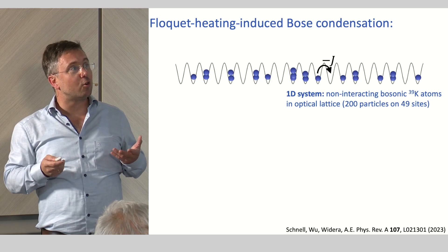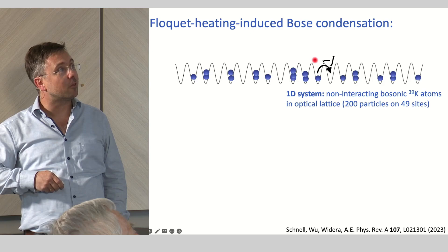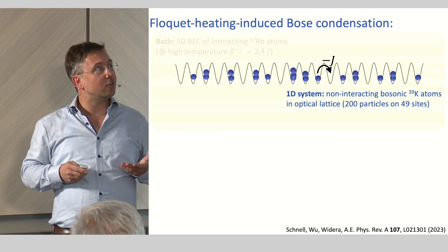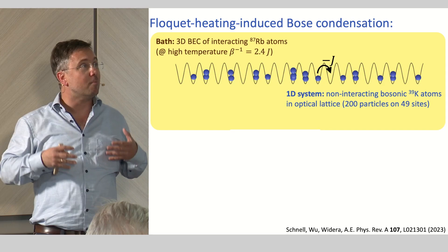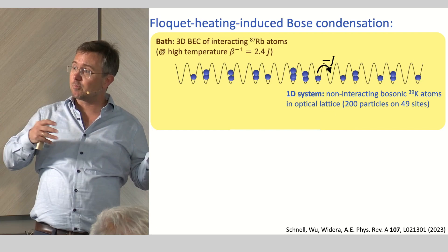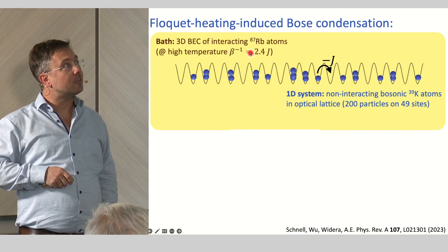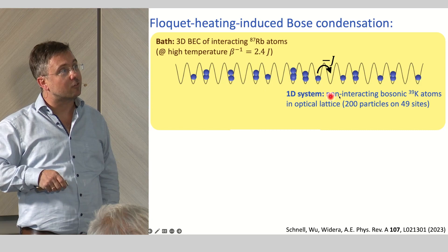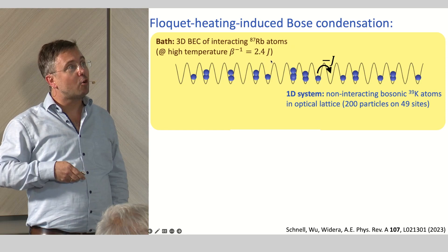For this, we consider now an ideal Bose gas. This is 200 particles on about 50 sites in an optical lattice with hopping constant J. And now we embed this system into a thermal bath given by a three-dimensional BEC. We did really some microscopic theory to mimic this, using a Bogoliubov approximation for the BEC and then doing all this Born-Markov theory to derive the master equation. And now this bath has a rather high temperature. It's 2.4 tunneling times.